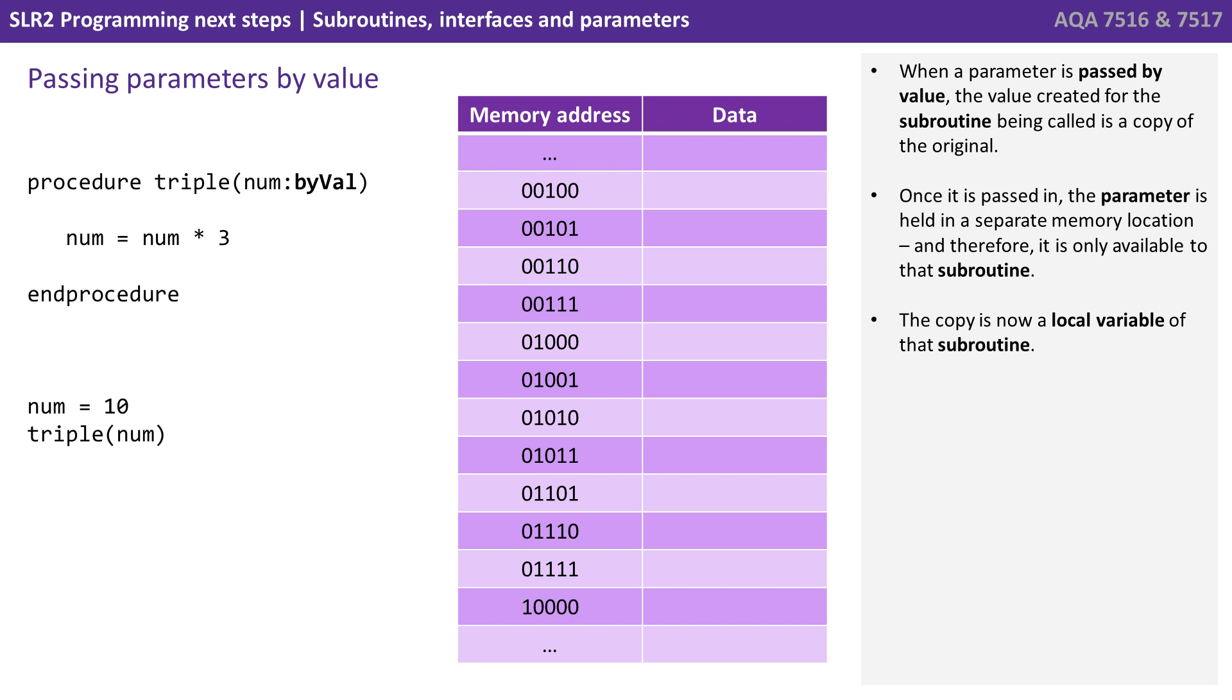So let's look at passing parameters by value. When a parameter is passed by value, the value created for the subroutine being called is a copy of the original. Once it's passed in, the parameter is held in a separate memory location, and therefore it's only available to that subroutine. The copy is now a local variable of that subroutine.